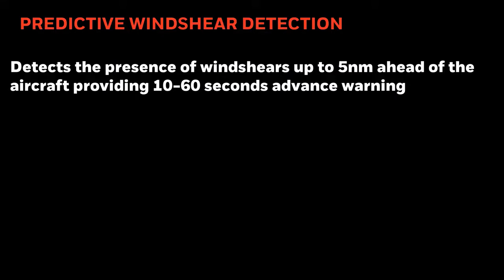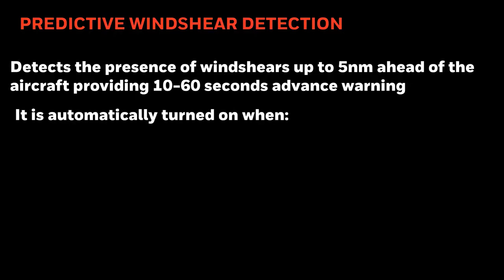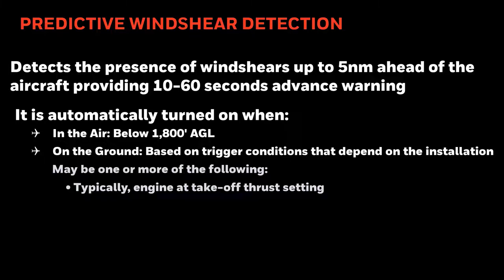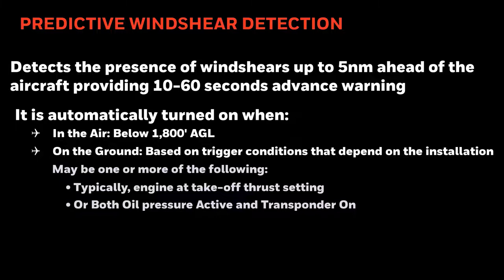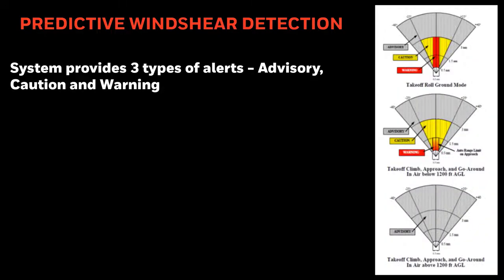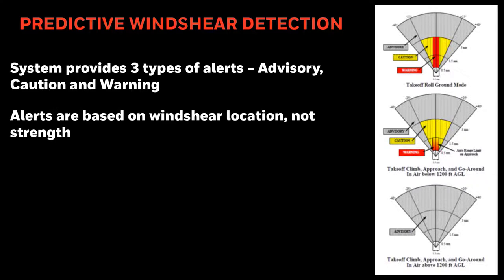Predictive wind shear isn't truly predictive — it uses Doppler radar to measure the speed of raindrops ahead of the aircraft. A fast-to-slow wind speed profile over the length of a typical runway is called a wind shear signature, which is what the radar detects to provide alerts. Predictive wind shear detection detects the presence of wind shears up to five nautical miles ahead, giving 10 to 60 seconds advance warning. It is automatically turned on when in the air below 1,800 feet AGL, or on the ground based on trigger conditions such as engine at takeoff thrust or transponder active. At 1,800 feet the system starts scanning so it can provide advisory alerts at 1,500 feet and cautions and warnings at 1,200 feet AGL.